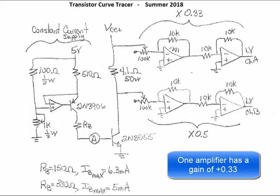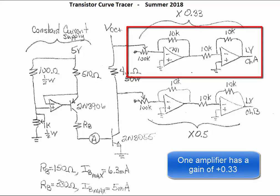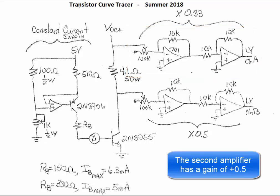One amplifier has a gain of positive one-third. The second amplifier has a gain of positive one-half.